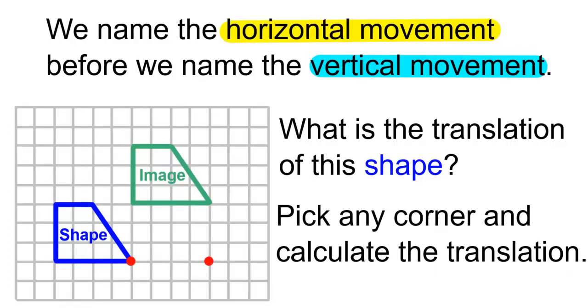We'll move that four places to the right. This will be the horizontal movement. Then we'll move this three places up. And that's the vertical movement.